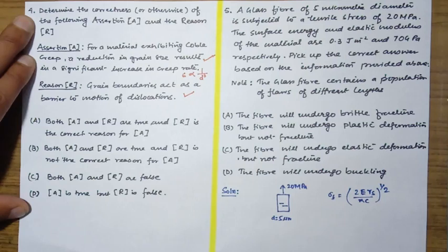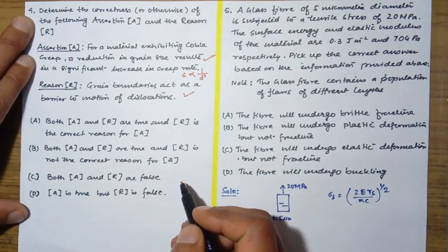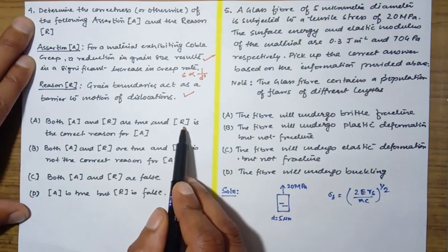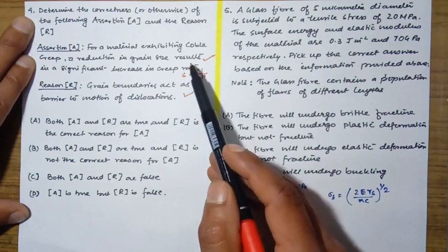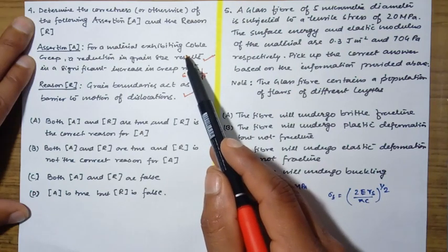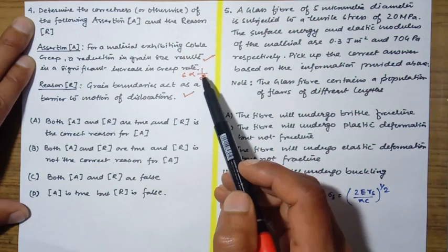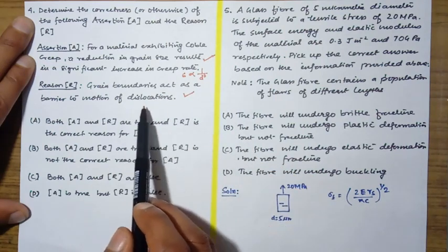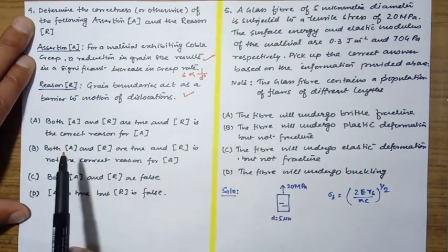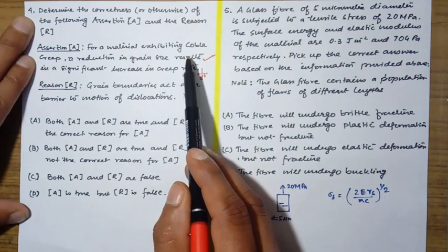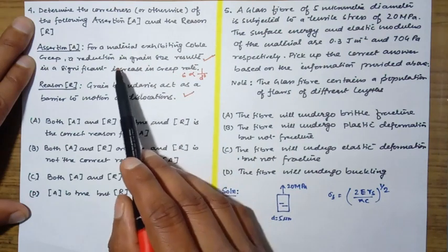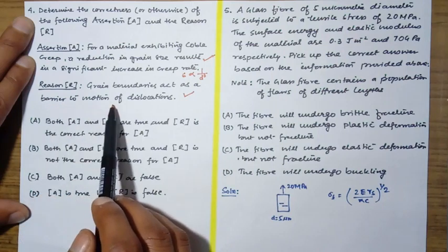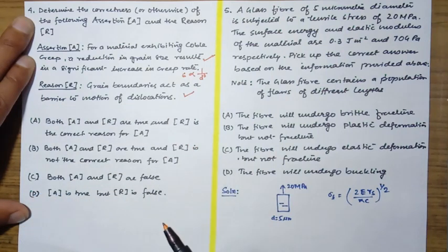Both A and R are true and reason is the correct reason for A. Now here since cobalt creep is basically related to the diffusion mechanism, it is not related with dislocations. So both are correct, but the reason for the increase in the creep rate is not because of the barrier to motion of dislocation, it's because of the more diffusion which takes place.